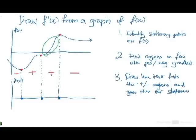And goes through our stationary points. So, where f'(x) equals 0. Yeah? So, very simple. We know that for this very first section at the left, the gradient is negative.